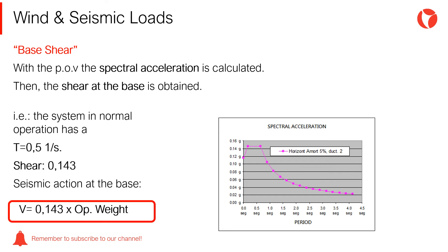For example, let's suppose that the system has a natural period of vibration of 0.5 seconds. This value is then entered in the curve and it is observed that the spectral acceleration for this equipment is 0.143 Gs. This means that the system will be subjected to a horizontal shear force at base, which will be equivalent to 0.143 times its operating weight.